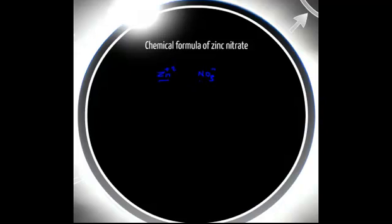Look at these two ions. These two ions are in stable ion configuration state. This shows that the valency of zinc plus 2 is 2 whereas the valency of nitrate ion is 1.